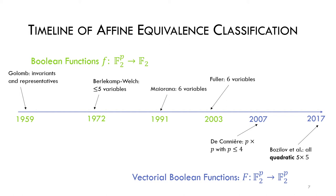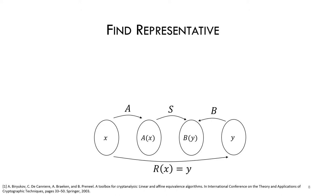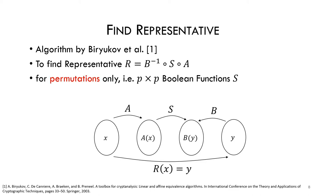This restriction to quadratic functions is justified because of recent interest in side-channel secure implementations and multiparty computation. The methodologies of both De Cannière and Bozilov et al. need an algorithm to find the affine equivalent representative of a class, and they both used an algorithm by Petjukov et al. which works for bijective Boolean functions.